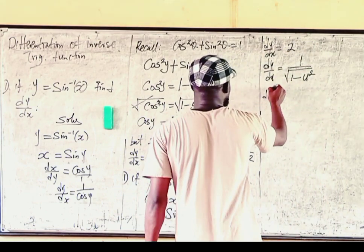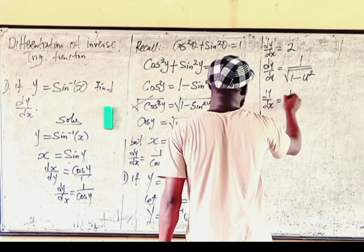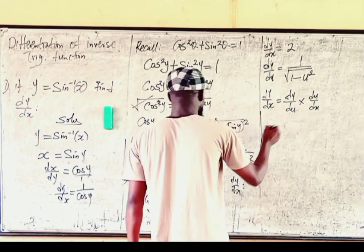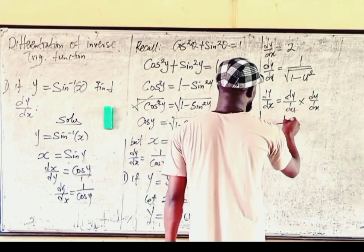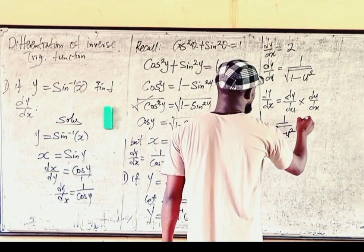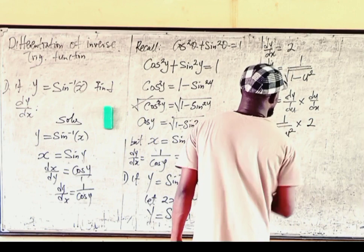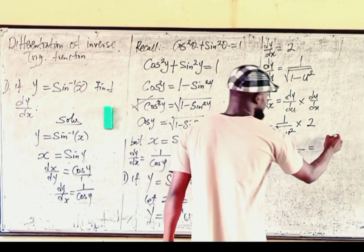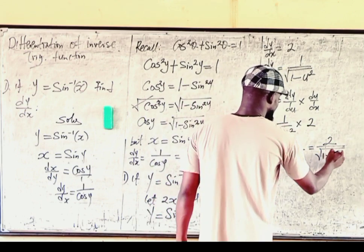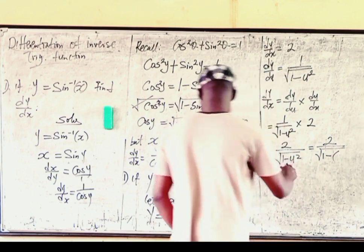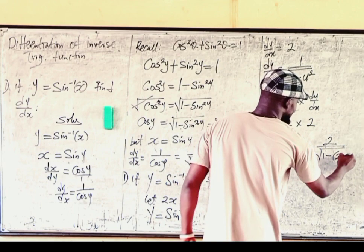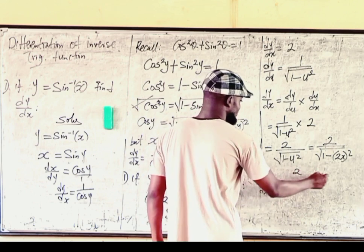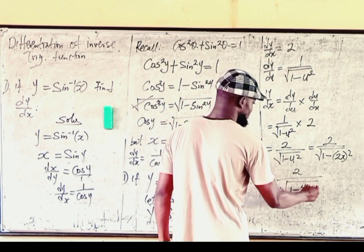Using the chain rule: dy over dx equals dy over du times du over dx, which equals 1 over the square root of 1 minus u squared, times 2. That gives 2 over the square root of 1 minus u squared. Since u equals 2x, we replace u with 2x and square it, giving the final answer: 2 over the square root of 1 minus 4x squared.